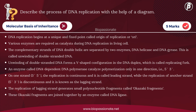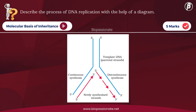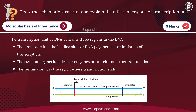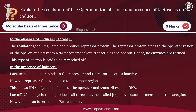Describe the process of DNA replication with the help of a diagram — for five marks. Describe the structure of an adaptor molecule, tRNA — for five marks. Draw the schematic structure and explain the different regions of a transcription unit — for five marks. Explain the regulation of the lac operon in the absence and presence of lactose as an inducer — for five marks.